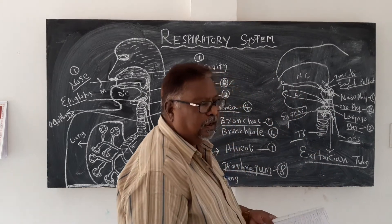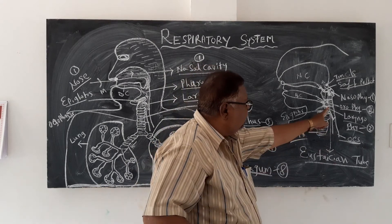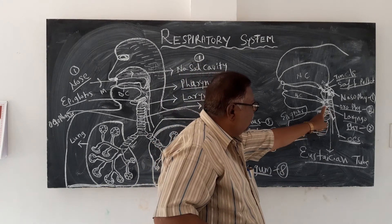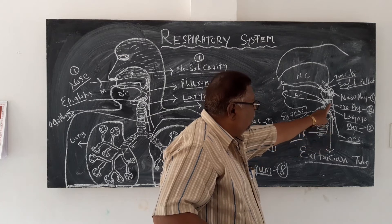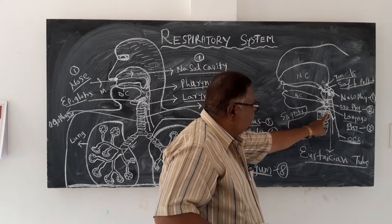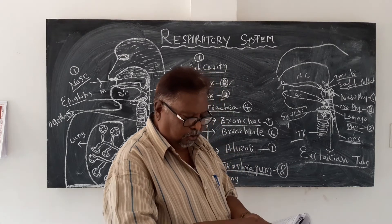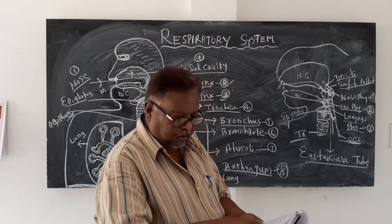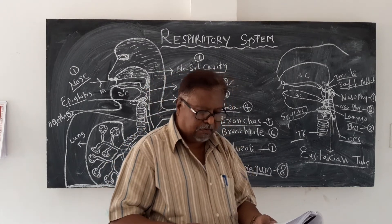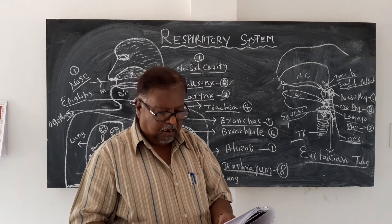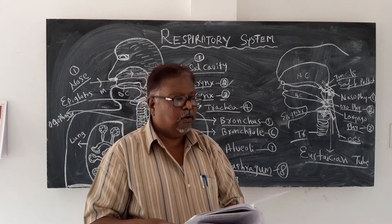The trachea is guided by the epiglottis, which is a flap. Whenever food comes, the epiglottis closes and food rushes into the esophagus. When air comes, the epiglottis opens and air goes into the trachea. The laryngopharynx is lined by stratified squamous epithelial cells, similar to the oropharynx.